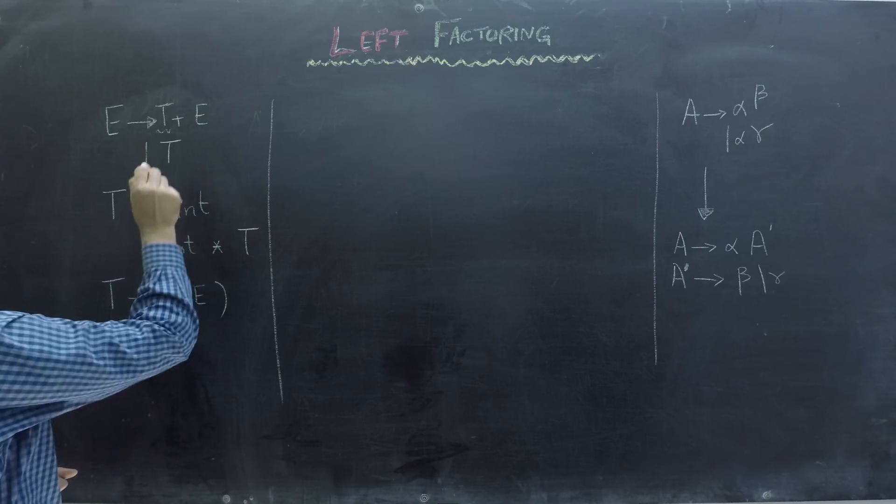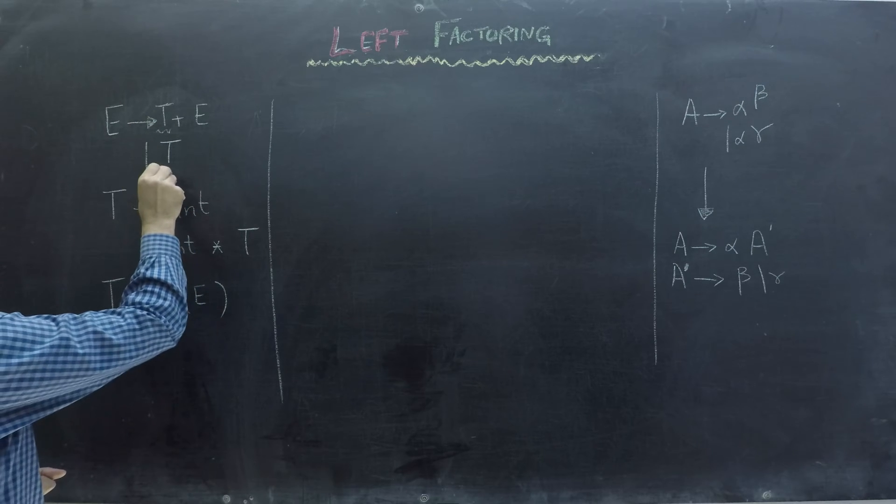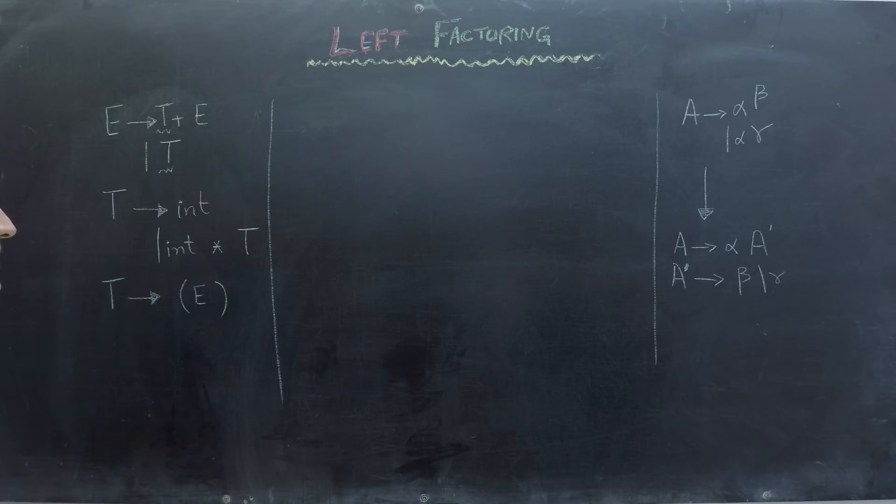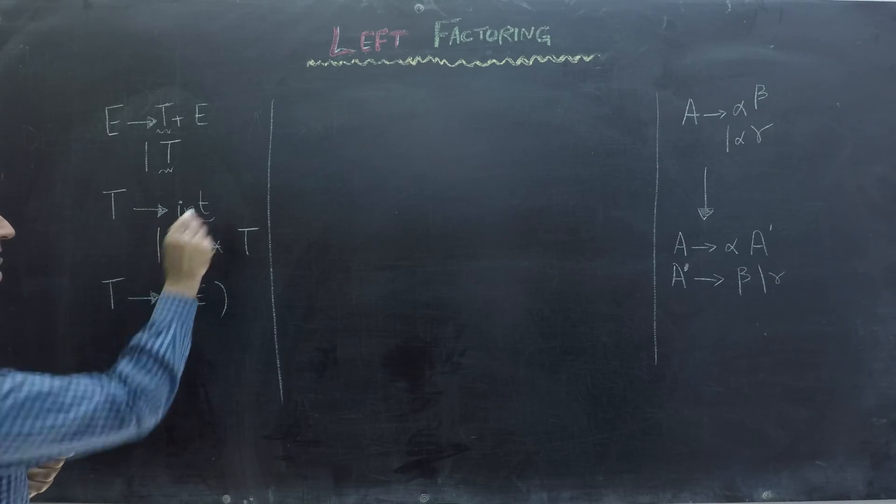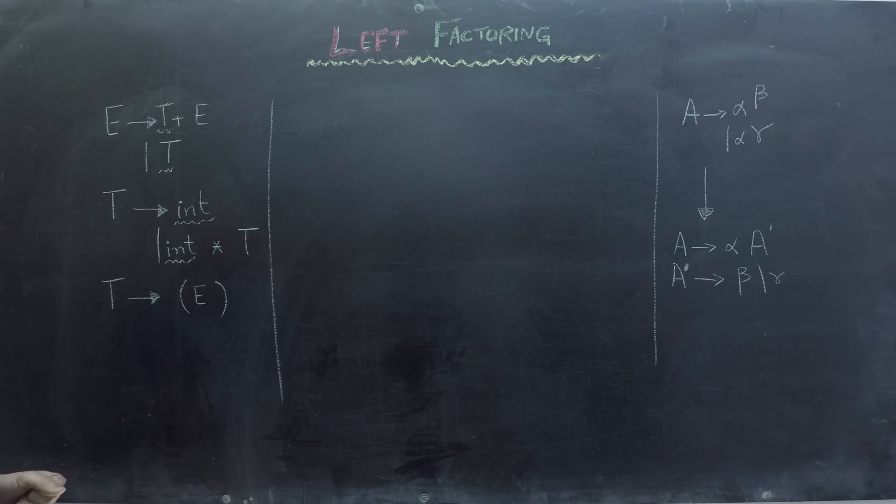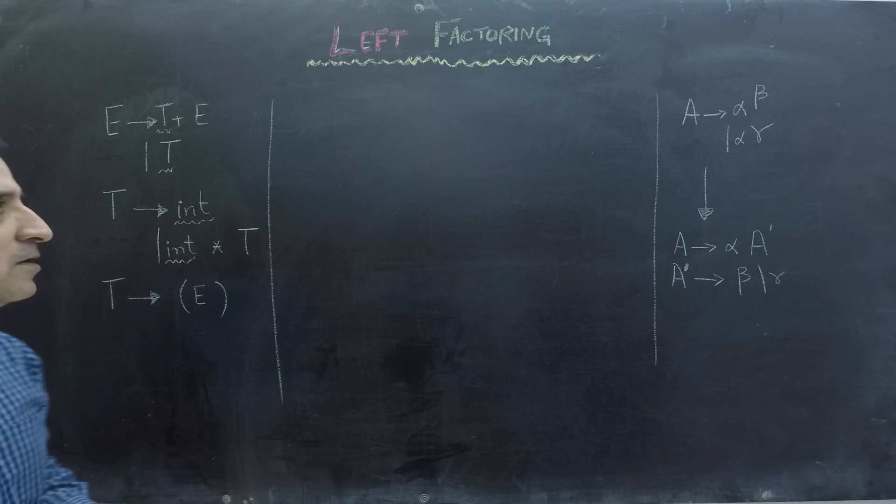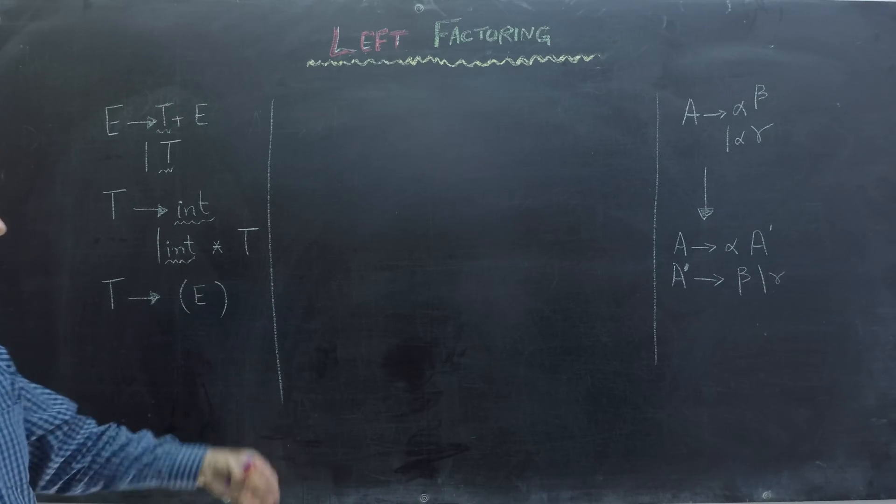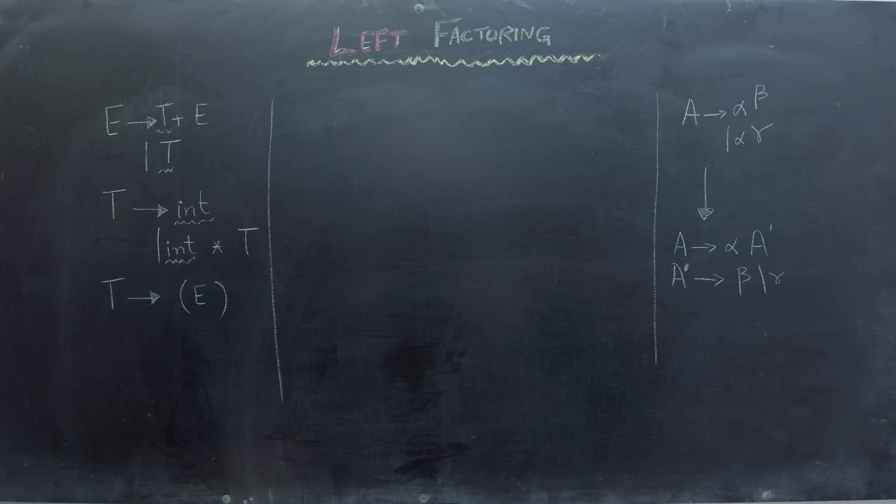One common prefix is T because we have T here and we have T here. Another common prefix is int. We have int here and also we have int here. So basically, left factoring has to apply on production of each non-terminal individually. So we have to first apply left factoring on production of E, then we have to apply left factoring on the productions of T.